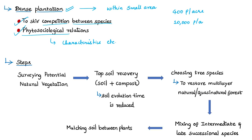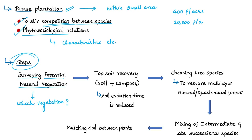The step-by-step Miyawaki method first involves surveying the potential natural vegetation of the area to be reforested — indicating the theoretical capacity of the land to sustain certain vegetation. Then the topsoil is recovered to a depth of 20 to 30 centimeters by mixing the soil with compost prepared from organic materials such as fallen leaves and grass. This reduces the time needed for natural soil evolution, which is normally established through vegetation succession.